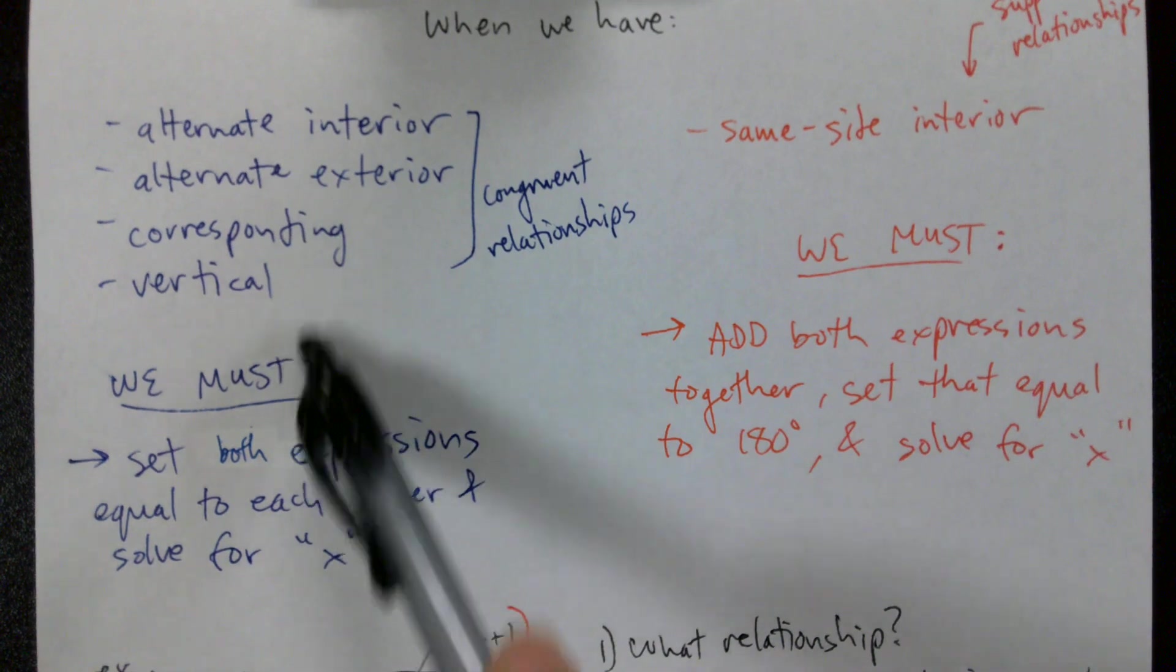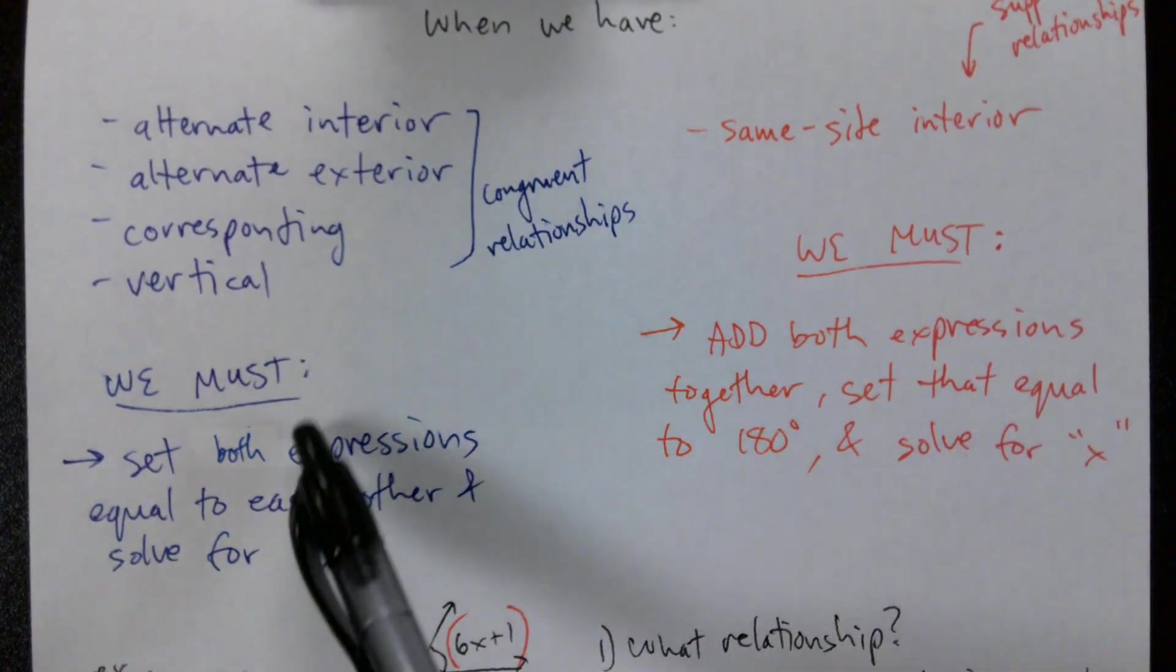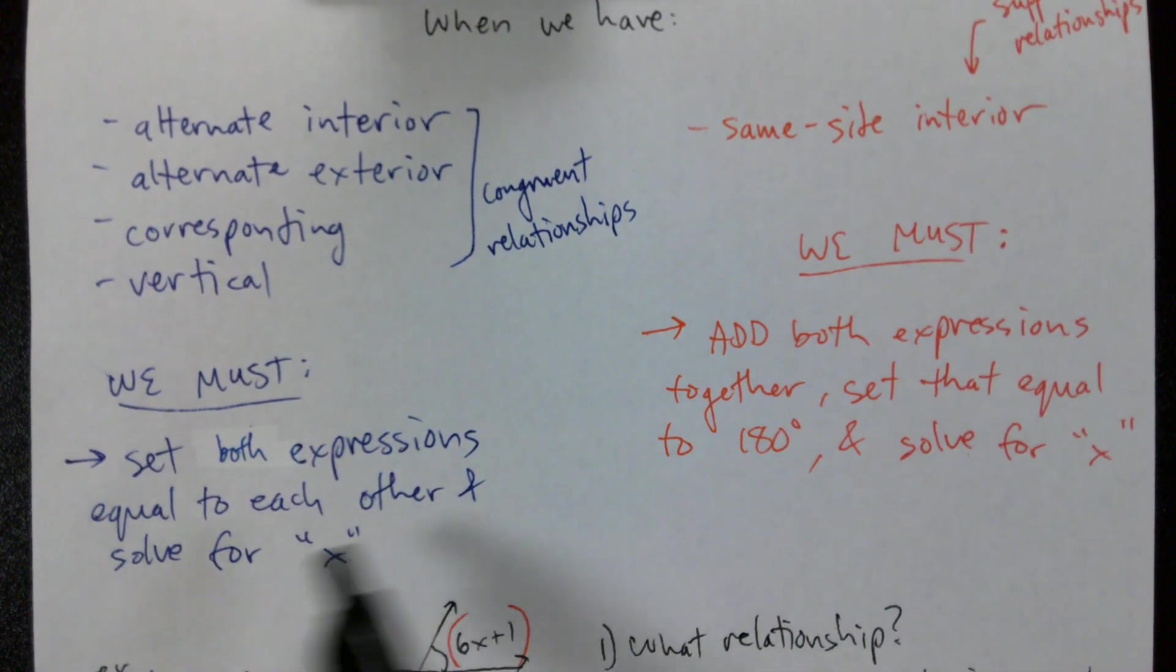So now we go look back up at our notes. Alternate exterior, oh that's right here on the left side. That's a congruent relationship. So what are we going to do? We'll set both expressions equal to each other and solve for x.